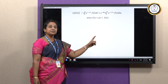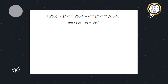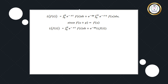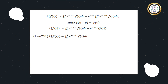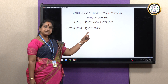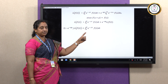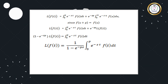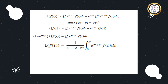The second integral is now in Laplace Transform format: integral from 0 to infinity of e^(−su) f(u) du = L{f(t)}. Collecting terms: L{f(t)} × (1 − e^(−sp)) = integral from 0 to p of e^(−st) f(t) dt. Therefore: L{f(t)} = [1 / (1 − e^(−ps))] × integral from 0 to p of e^(−st) f(t) dt.